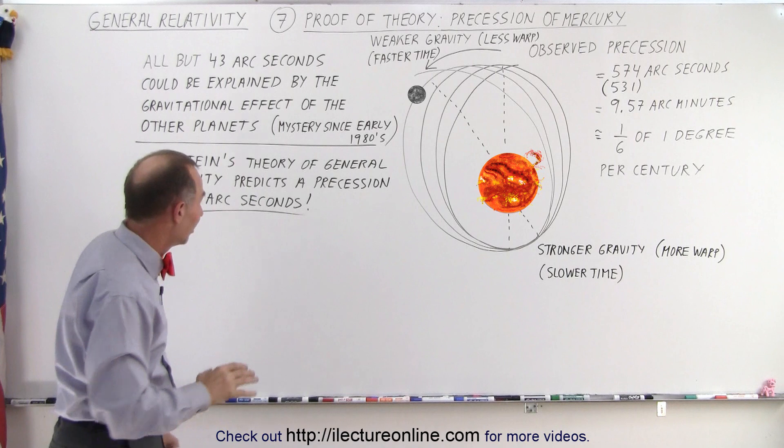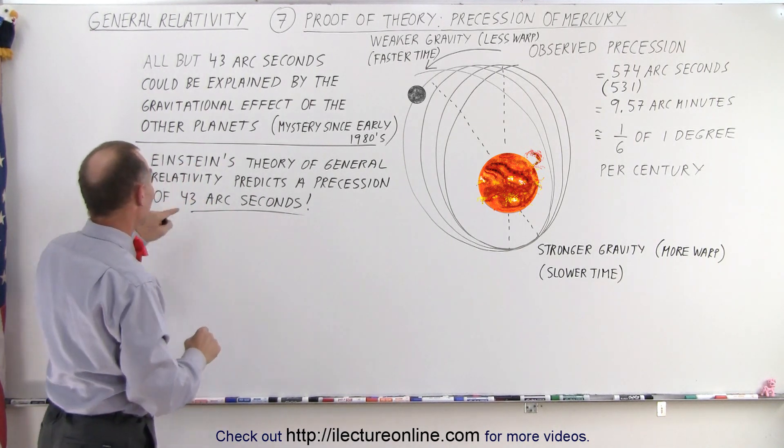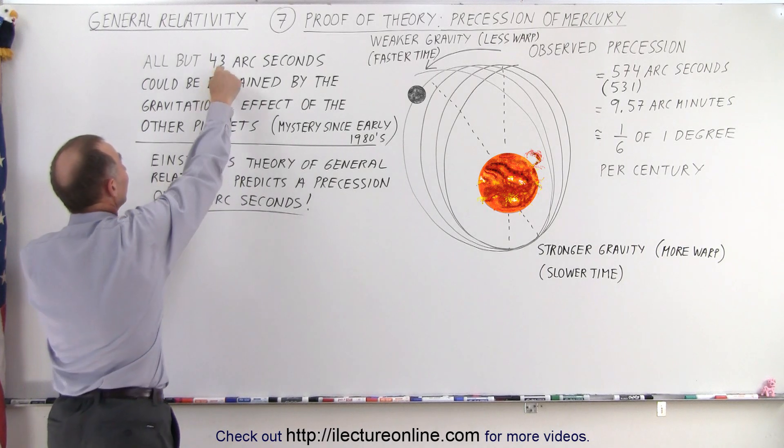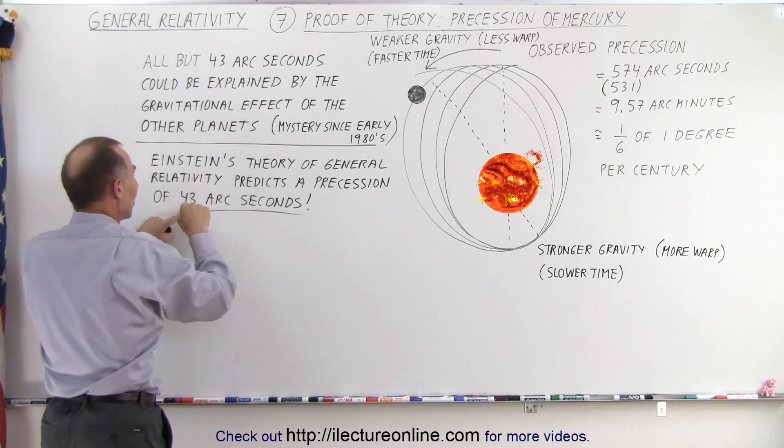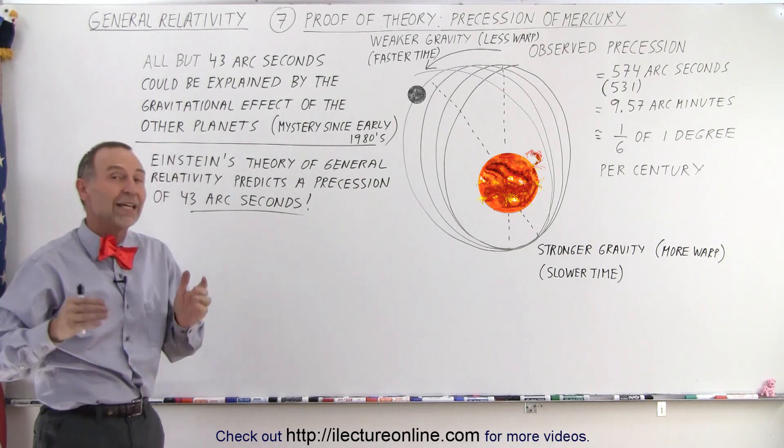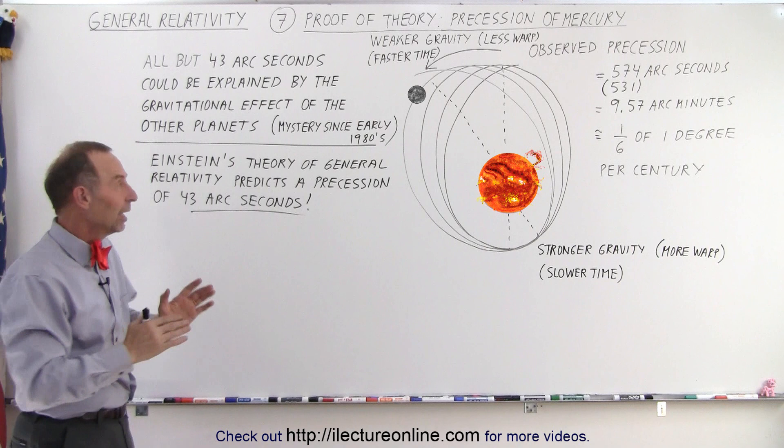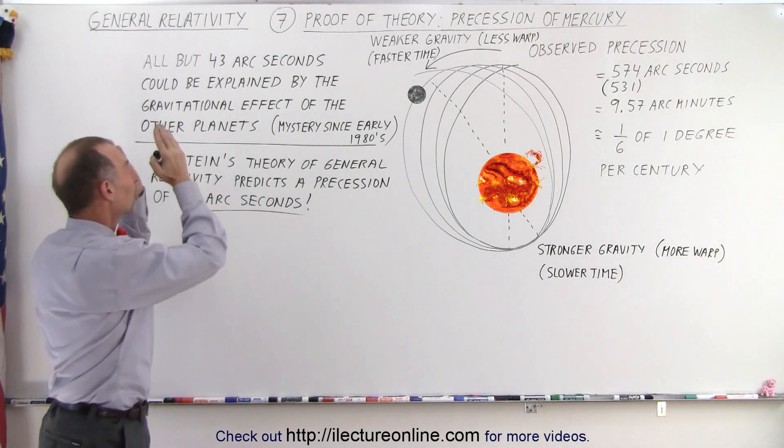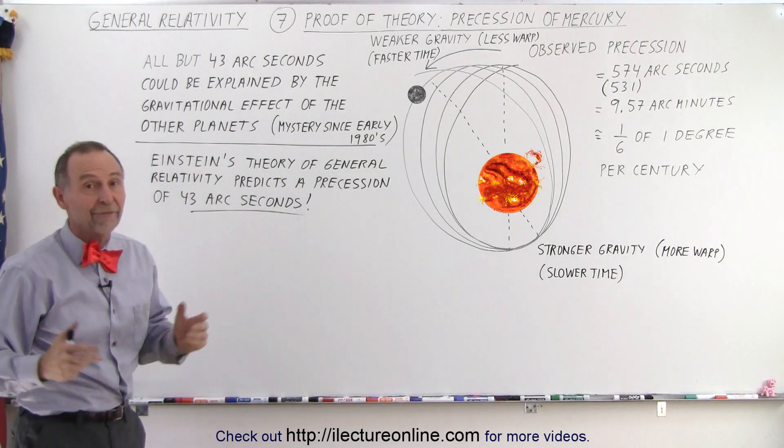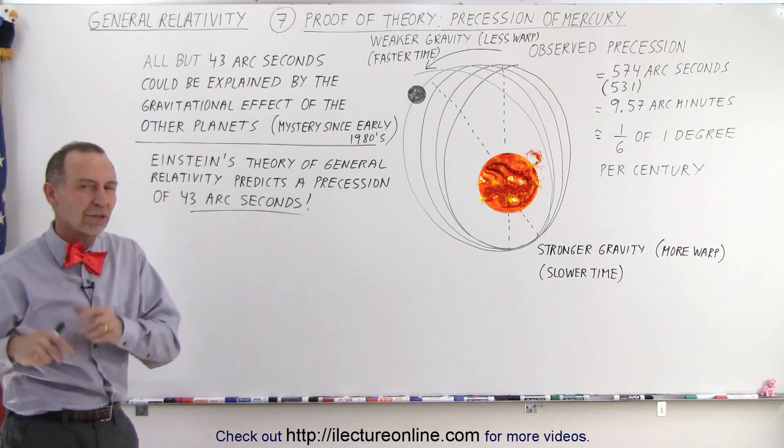There was an exact comparison between the missing 43 arc seconds and what they calculated when they used the calculation derived from the general theory of relativity. It was unbelievable. It was amazing how close the two numbers were. Finally, they were able to explain something they weren't able to explain for almost a hundred years.